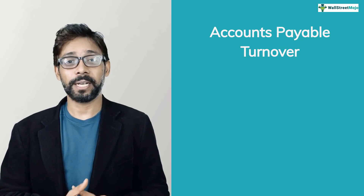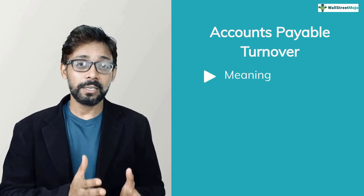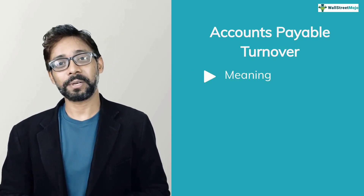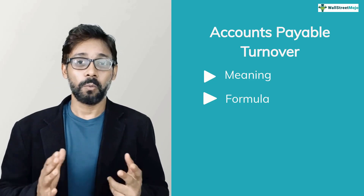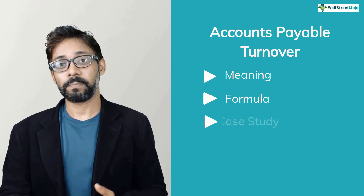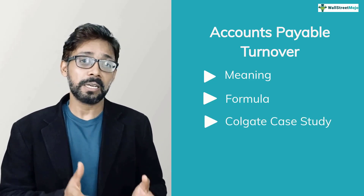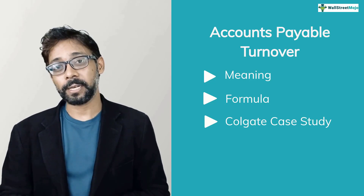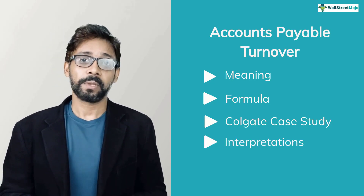In this tutorial, we basically have four objectives. Number one, understand what accounts payables turnover is. Number two, what are the calculations and formulas? Number three, calculate accounts payables turnover for the Colgate case study. And number four, its interpretations.